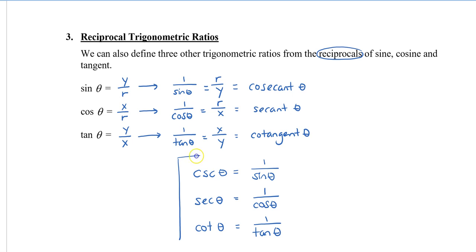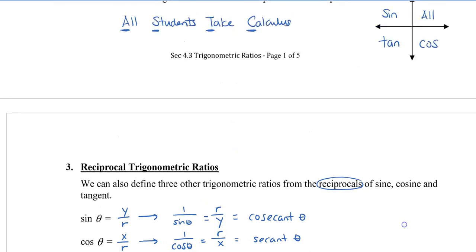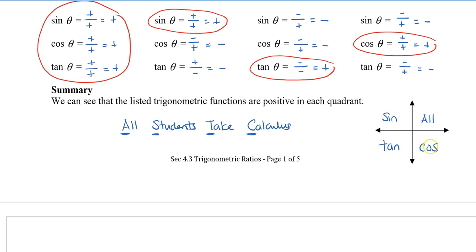These three are the reciprocal trig ratios, and it's handy to have them memorized. One thing to note: the quadrant sign rules we just covered apply equally to the reciprocals. Sine is positive in quadrant 2, and so is cosecant. Tan is positive in quadrant 3, and so is cotangent. Cosine is positive in quadrant 4, and so is its reciprocal, secant.